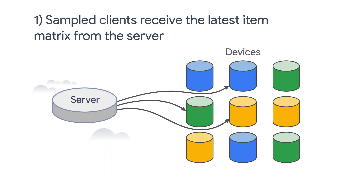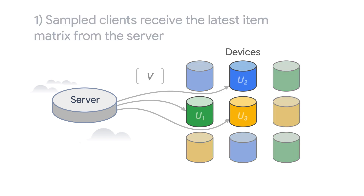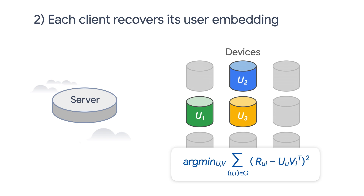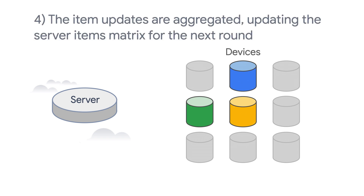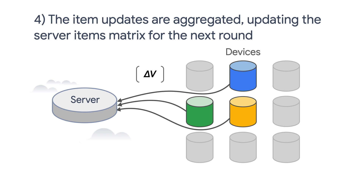First, the server stores and sends the global item matrix V to sampled clients in each round. Then each client freezes the item matrix V and trains its local user embedding U using one or more steps of SGD — this is the reconstruction step. After that, each client freezes its local user embedding U and trains the item matrix to produce an update delta V. Finally, item matrix updates delta V are aggregated on the server to produce the new global matrix V' for the next round. In this way, we are only sending the global item matrix updates back to the server, and user privacy is being preserved.